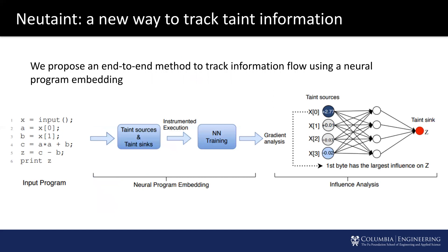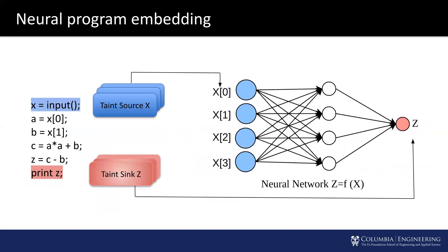We propose an end-to-end method to track information flow using neural program embedding. Here is the overview of our tool, NeuTaint. Given a program, we first obtain a set of taint source and sink values and train a neural program. After the neural program embedding, we perform influence analysis on the neural program to infer the information flow. For example, X marked in blue is the taint source and Z marked in red is the taint sink. We collect a set of X-Z pairs and train a neural network with these value pairs.